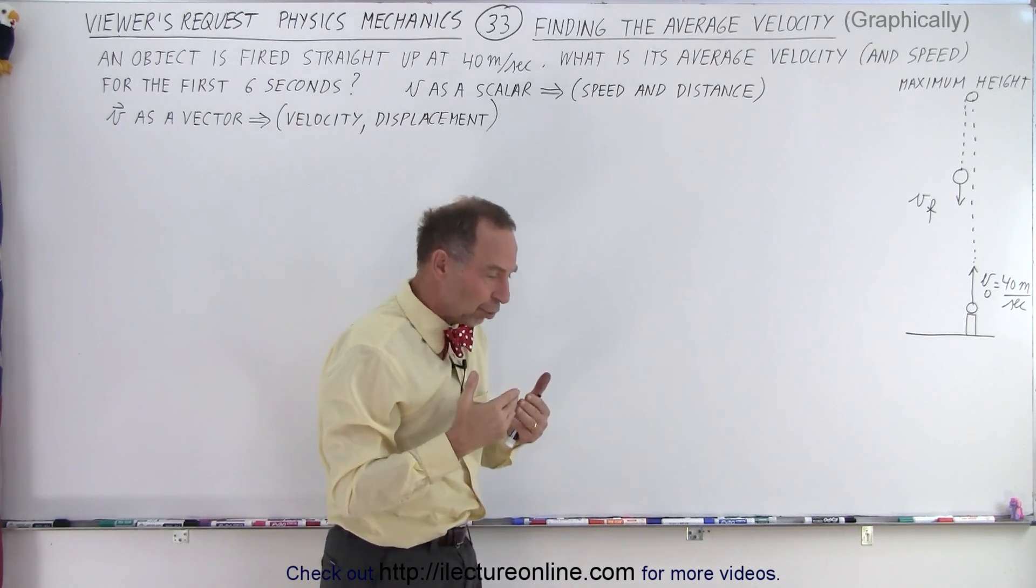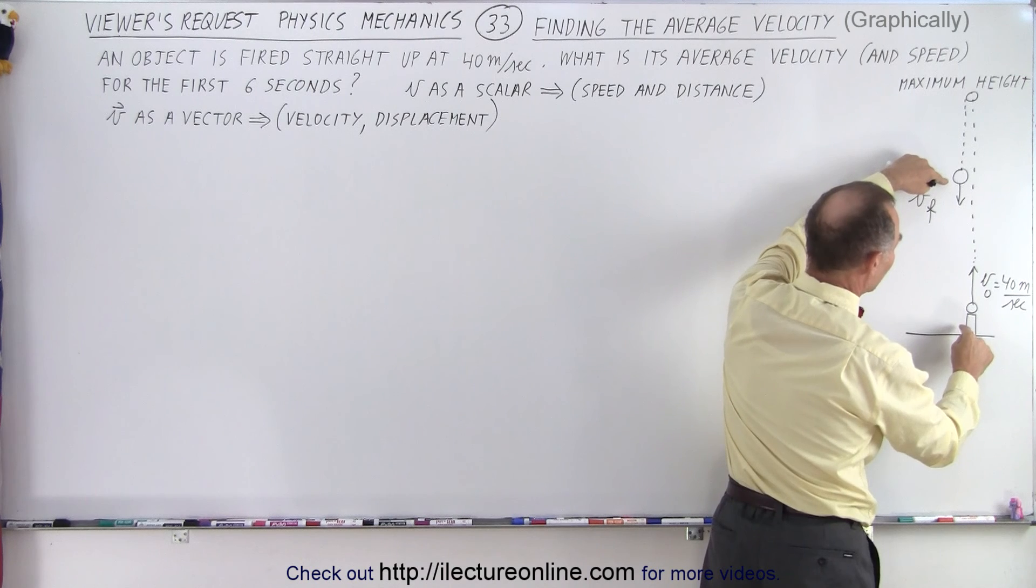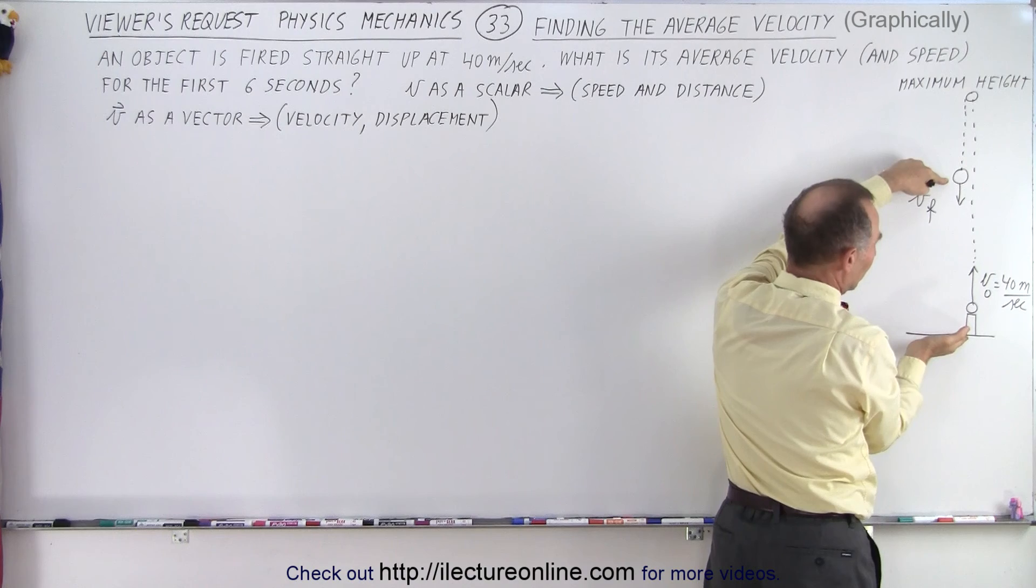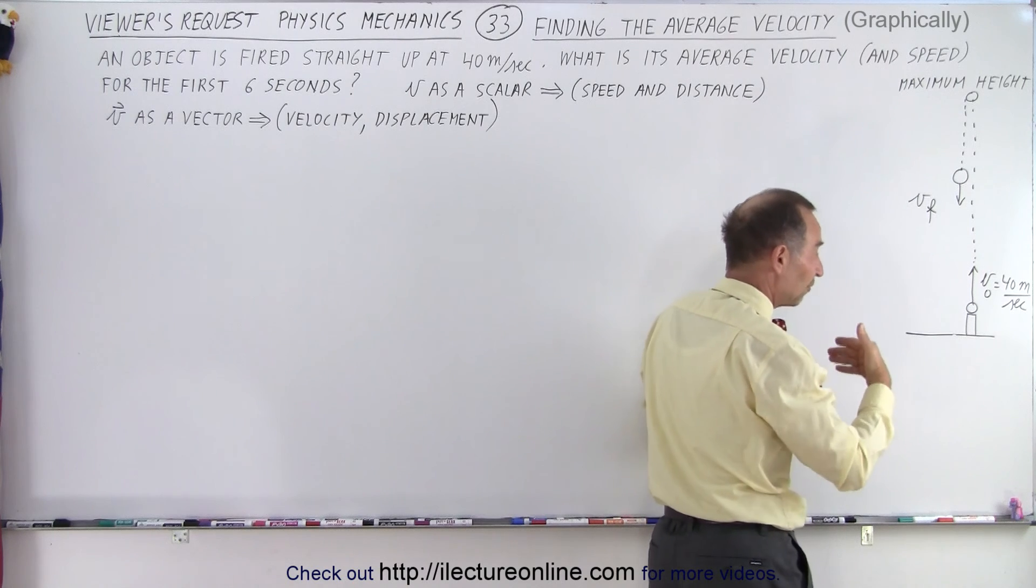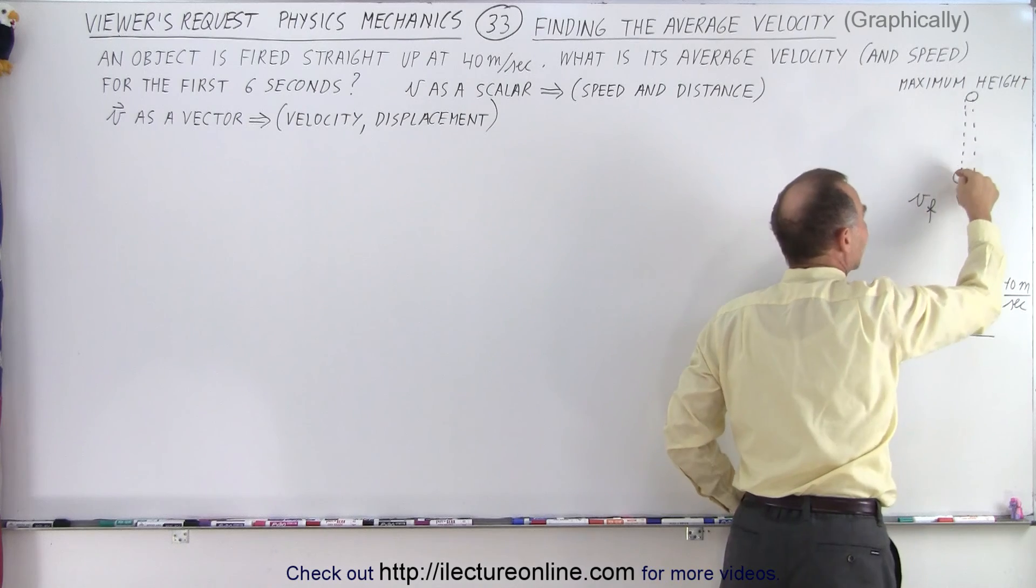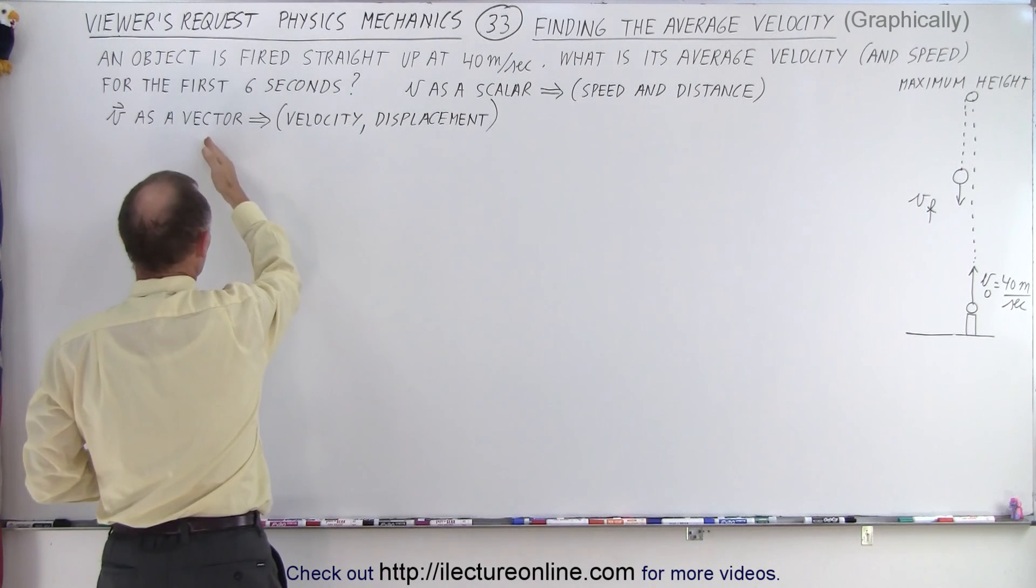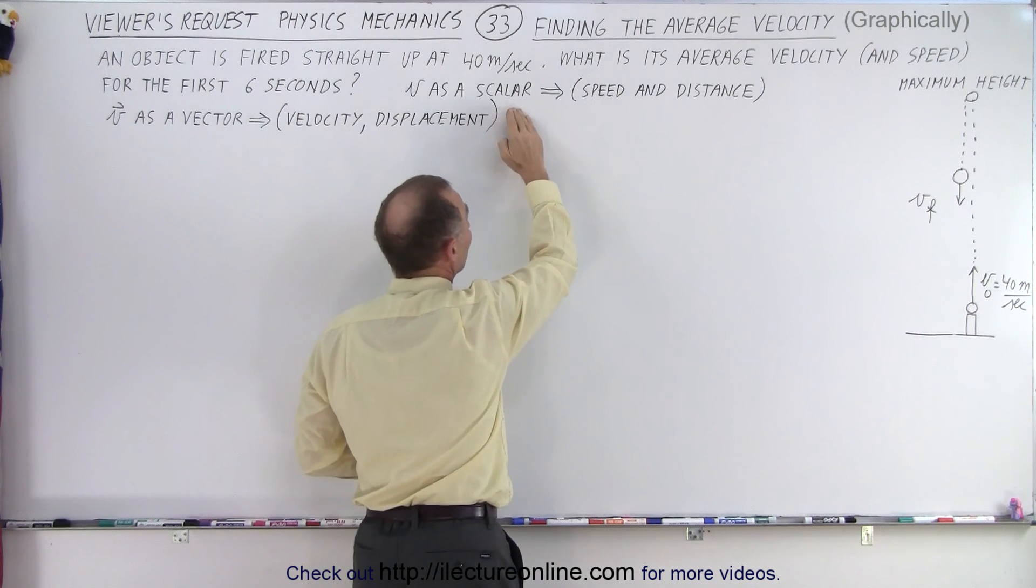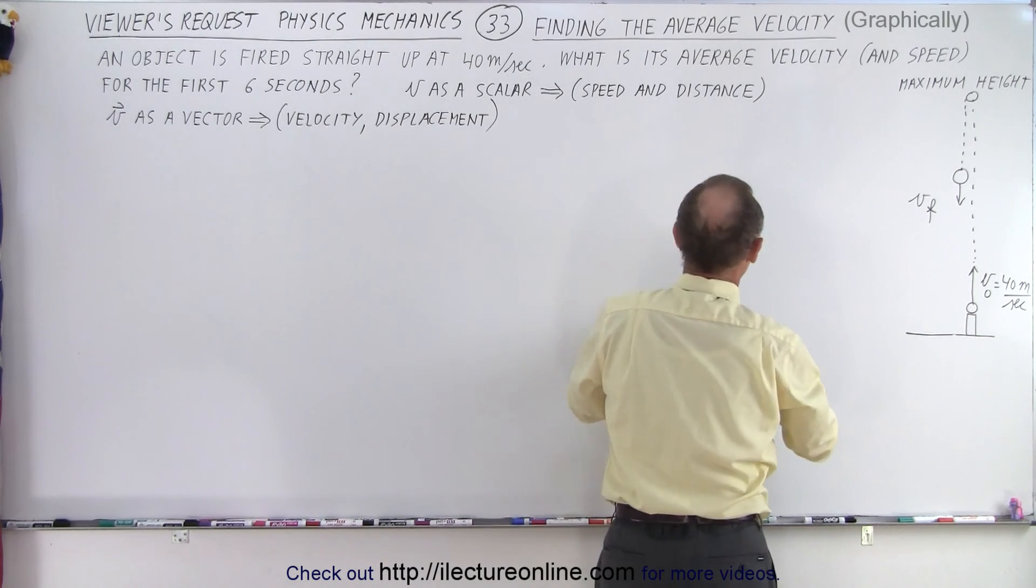If we think of it in terms of a vector quantity, then the displacement is only the difference from here to here. It only takes the total displacement. But if we do it as a scalar and think about speed and distance, then the total distance traveled is all the way to the very top and then back down. So it does depend upon how they want us to look at the problem. If we're looking at it as a vector, we need to take into account velocity and displacement. If we look at it as a scalar, we think about speed and distance.